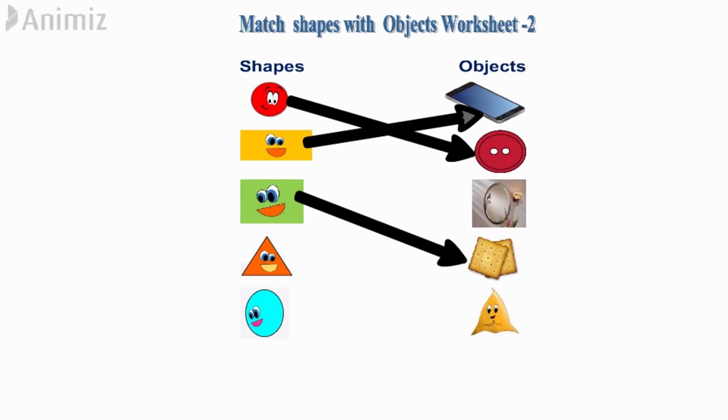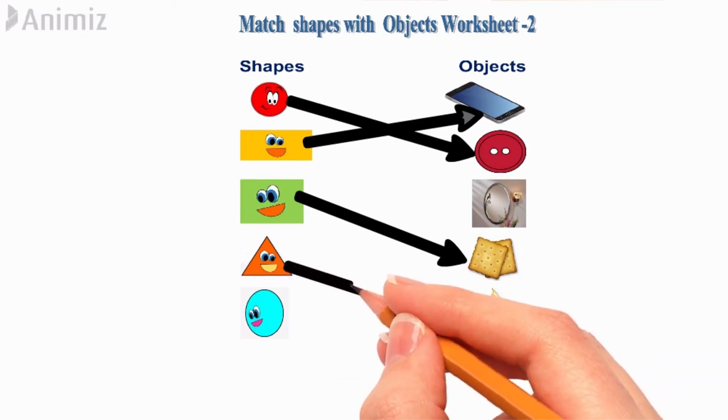Again, see in the first column, the fourth shape is triangle. Let's find the object. Yes, it is a samosa.